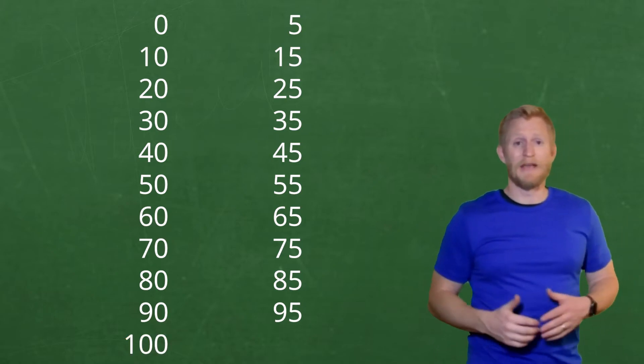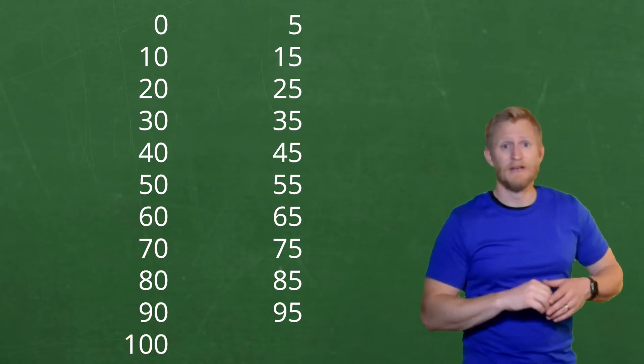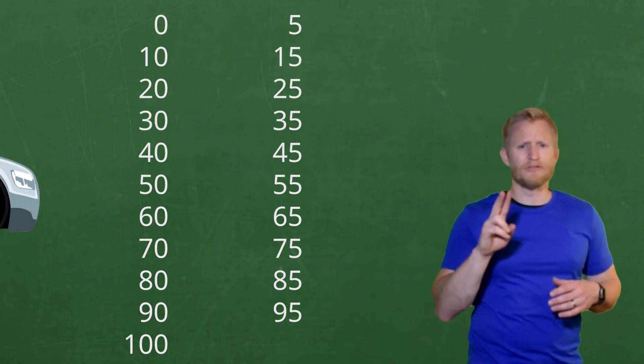See how fast we can count up to 100 when skip counting by fives? It's even easier and faster than counting by ones or twos.